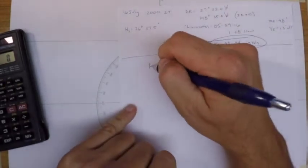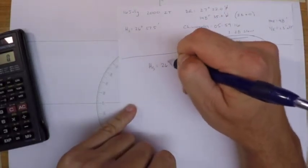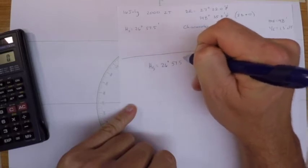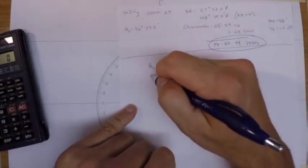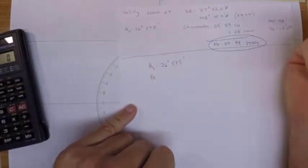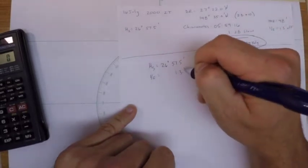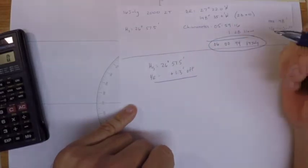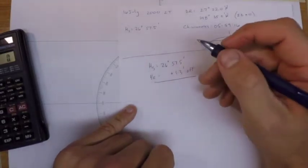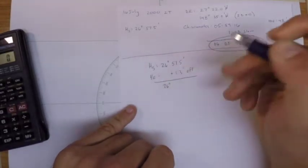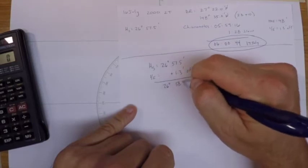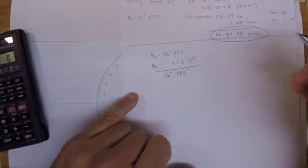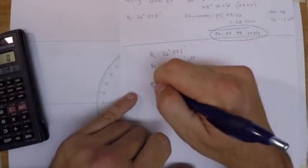The next thing we can do is take our height of sextant which was 26 degrees 57.5 and make some corrections to that. First one would be index error, and that was given as 1.3 off the arc so we need to add it back on and we'll end up there with 26 degrees 58.8 minutes.